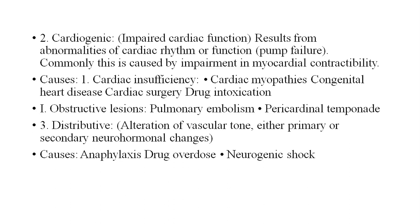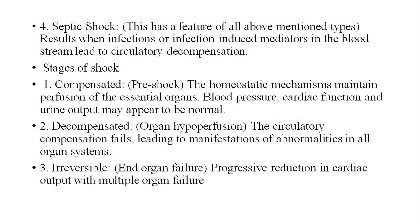Then obstructive lesions: pulmonary embolism and pericardial tamponade. Third is distributive: alteration of vascular tone either primary or secondary to neural hormonal changes. Causes are anaphylaxis, drug overdose, and neurogenic shock. Fourth is septic shock, which has features of all the above-mentioned types. It results when infection-induced mediators in the bloodstream lead to circulatory decompensation.